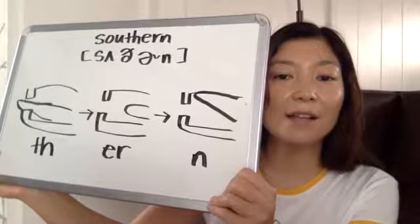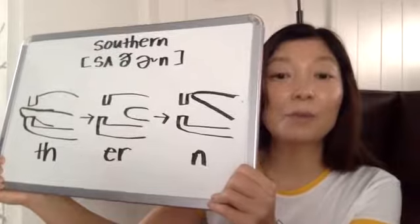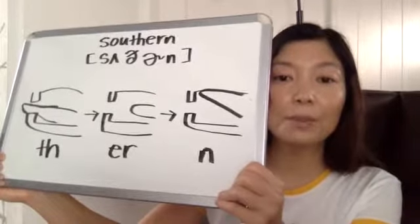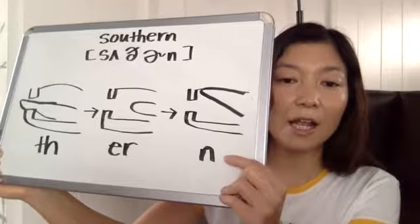And then N. In Japanese we don't put the tongue up on the roof. But in English we put the tongue up on the roof and pronounce it N.